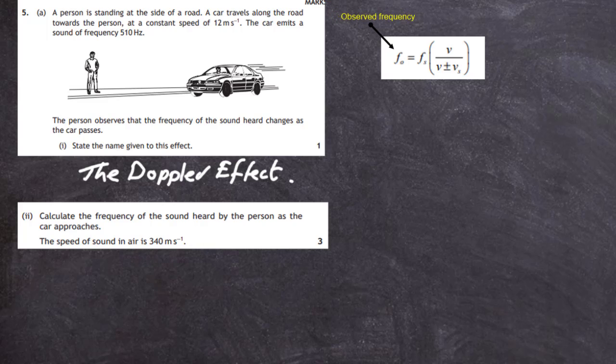F0 is the observed frequency, the frequency the person hears. Fs is the frequency of the sound produced by the source, the horn when it's not moving. V represents the speed of sound which is 340 meters per second. And Vs is the speed of the source, the speed at which the horn is coming towards the person.